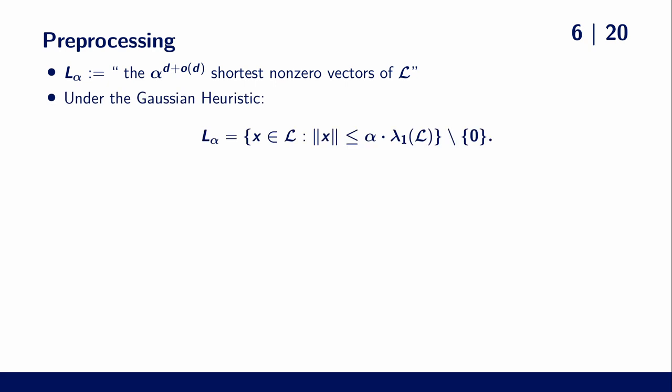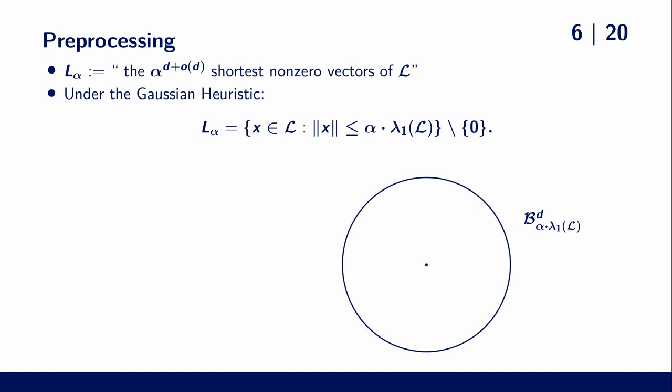Under the widely used Gaussian heuristic, this is somewhat equivalent to saying that the list contains all lattice vectors up to length alpha times the first minimum. So they are all included in this ball.